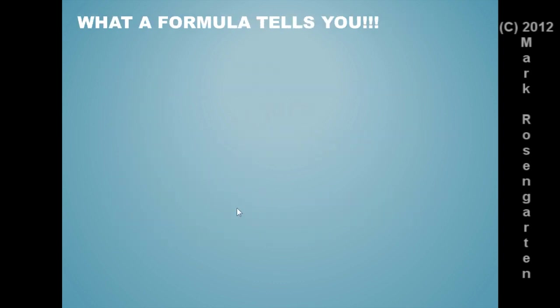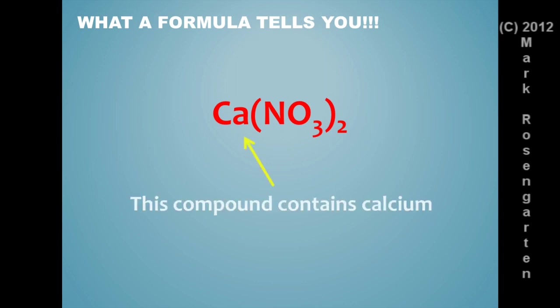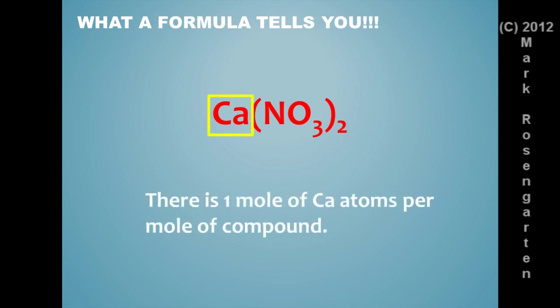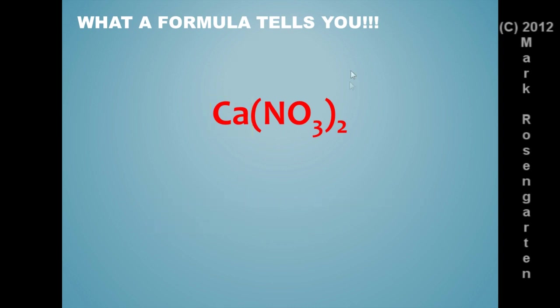So let's take a look at this formula here. We have calcium nitrate. Now, according to this, we have calcium, nitrogen, and oxygen. That is qualitative analysis. It tells you what elements are in the compound. It also tells us that there's one mole of calcium atoms for each mole of compound. It also tells us that,